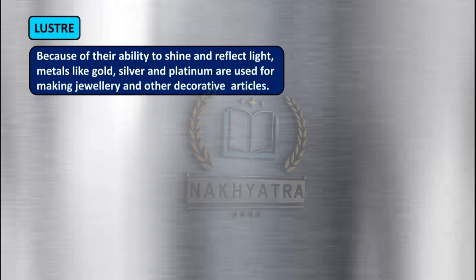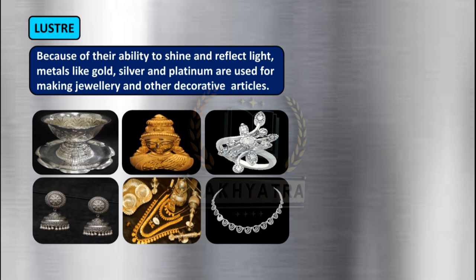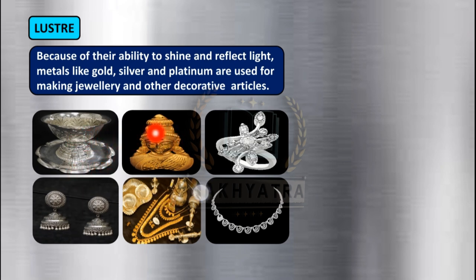Because of their ability to shine and reflect light, metals like gold, silver, and platinum are used for making jewelry and other decorative articles. Since they have the property of lustre — the ability to shine and reflect light — they are used for making jewelry and decorative articles.